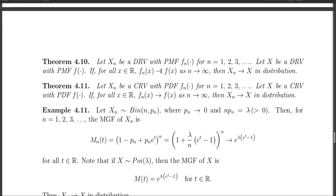This convergence is again pointwise convergence and has to be true for all x in R. So if for all x in R, fn(x), the PMF of Xn, converges to the PMF of X pointwise, then Xn converges to X in distribution. The same thing is true for the continuous random variable: if the PDF of Xn converges to the PDF of X pointwise for all points in R, then Xn converges to X in distribution.